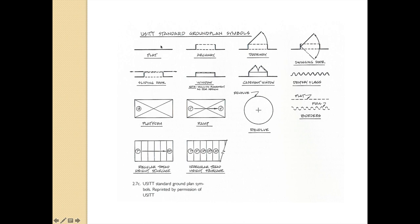A flat drawn with dotted lines suggests it is up in the air or underneath something — dotted lines can mean different things. When in doubt, the key is always to label, so people will understand what's actually going on.